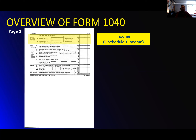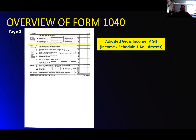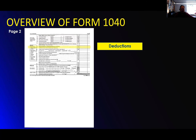Page two is another half page, which makes no sense. The income section is just the upper portion — it has a summary now. Everything is done by schedule. Schedule one is all of your income area, and this whole thing is just the summary page. These are your totals from that for your adjusted gross income, which is the income plus the schedule one adjustments.